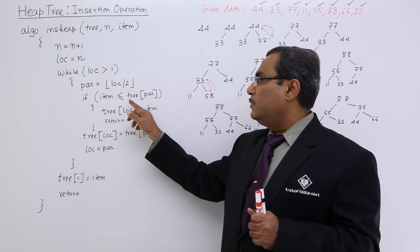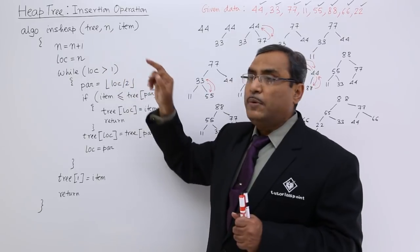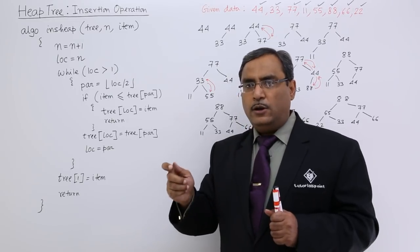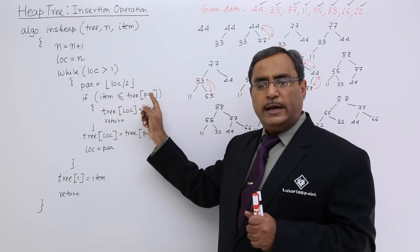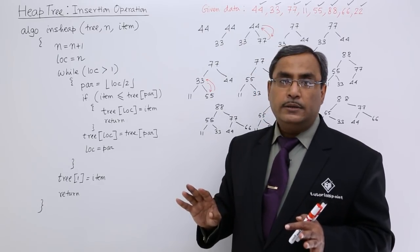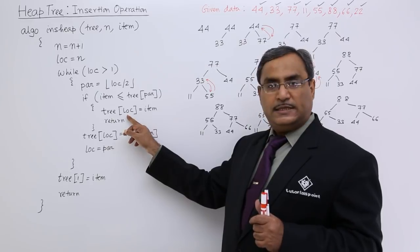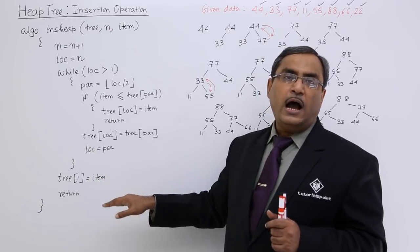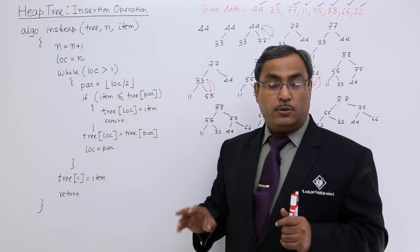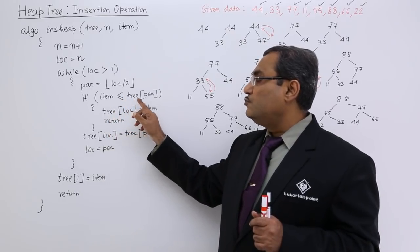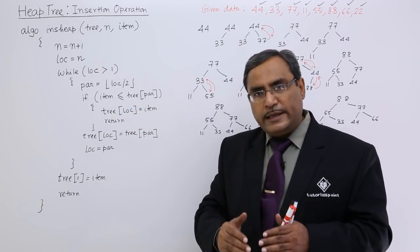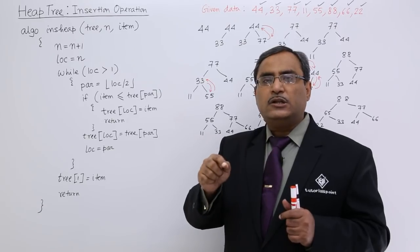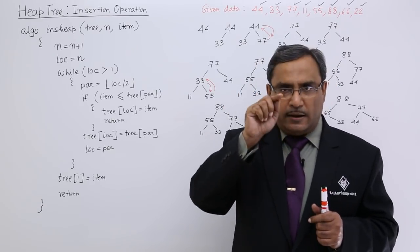Now, if item is less than equal to tree par, what is the tree? Tree is the name of the array. The location content at the par location content, that is the parent value, is greater than this item or equal to greater than equal to this item. That means there is no need to have reheaping. Tree free space, that is lock, is equal to item and return. Return means the rest part will remain unreachable. Here the control will be returned when the item is less than equal to tree par. But let us suppose tree par is lesser than item. Then what will happen? The parent content will be coming to the free space and free space logically will be going up to the parent place at location number.